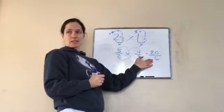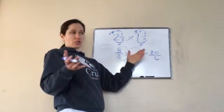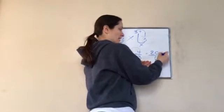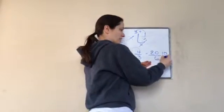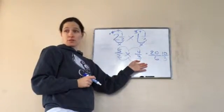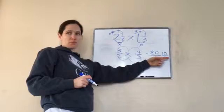Reduce first. Okay. What will go into both 20 and six? Oh. I know two. I know two will. Two goes into 20, 10 times. Two goes into six, three times. Okay. I don't think it will reduce any more.